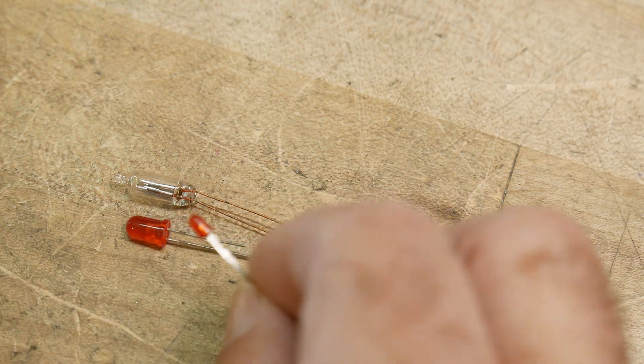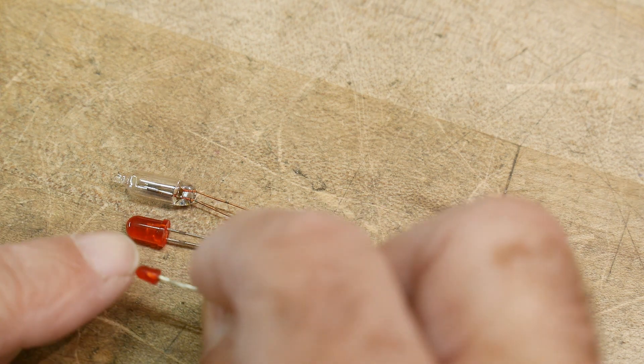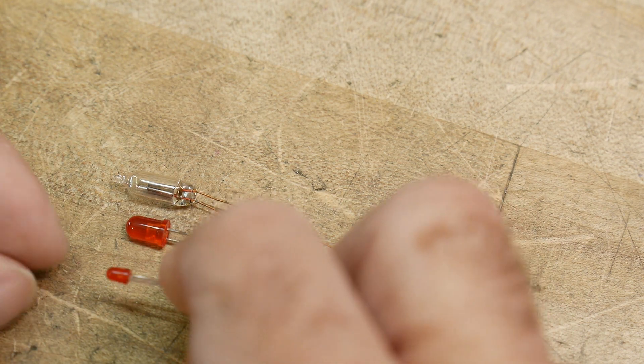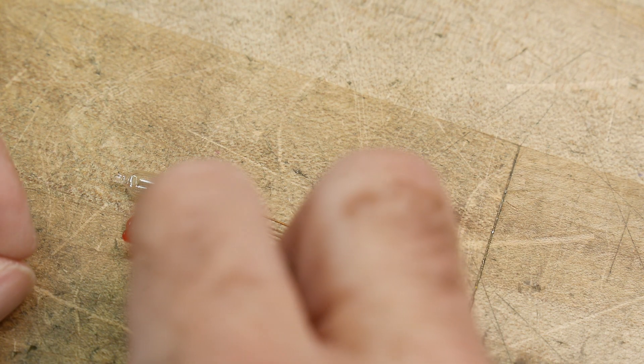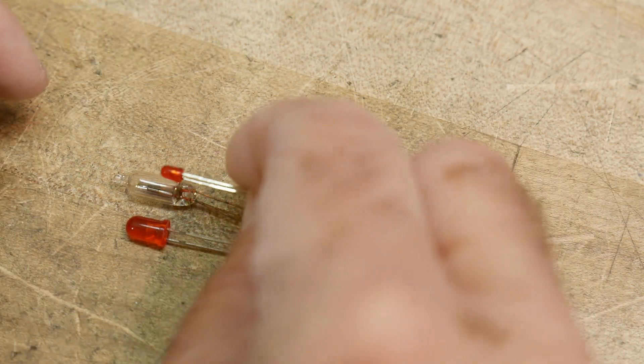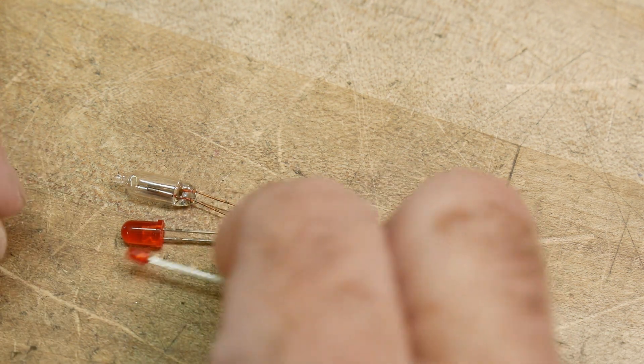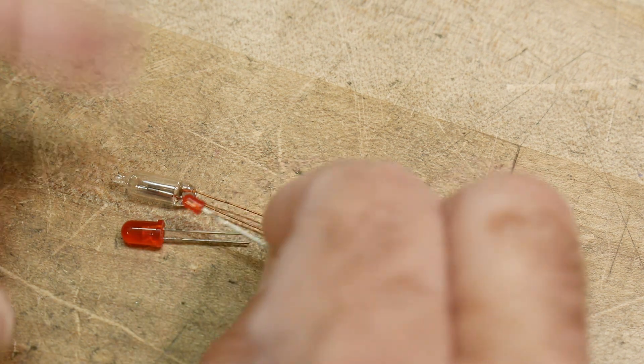Now LEDs come in smaller ones. The next ones that were developed are called T1 - this is the T1 LED. These are maybe 3mm, I don't know if that sounds right, but anyway these are small compared to the T1 and 3/4. So, did